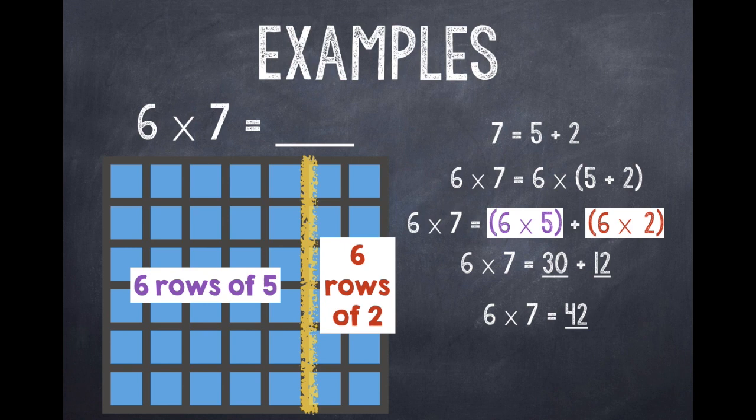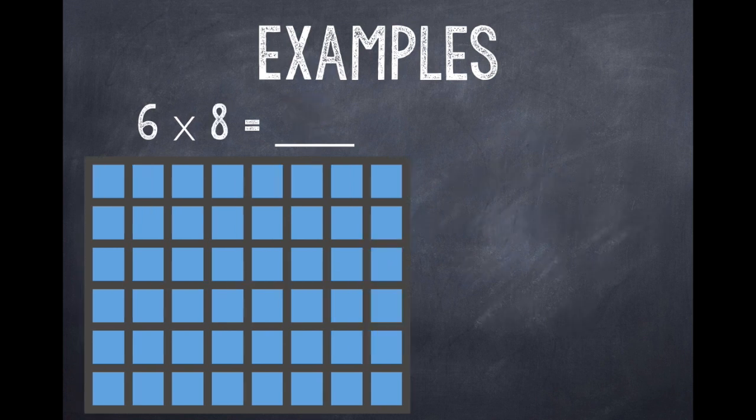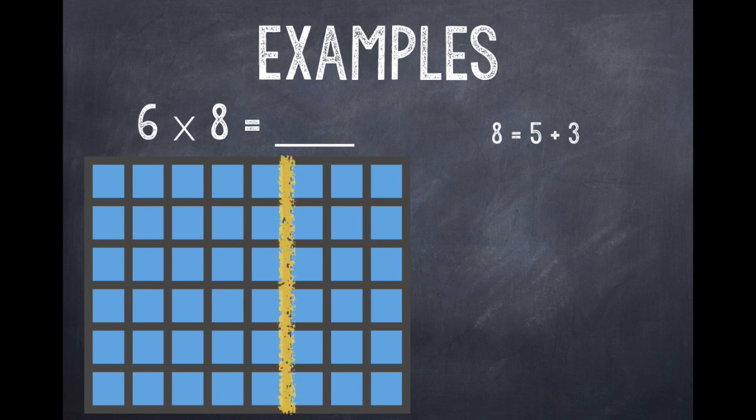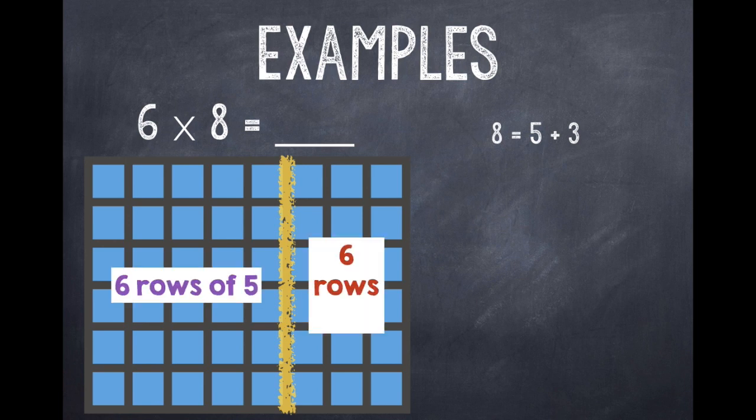Let's try another example. 6 × 8. So I have my array. It has 6 rows of 8. And instead of multiplying by 8, I know that 8 is equal to 5 + 3. So on my array, I draw a line. So now I have 6 rows of 5 and 6 rows of 3.